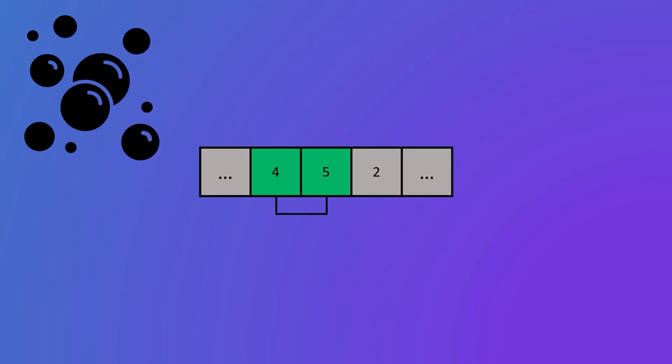If the first number is smaller or equal to the second number, the next pair of numbers will be compared. If it's bigger, the numbers will be swapped. This process is repeated until the end of the array is reached, where the biggest number will be stored.